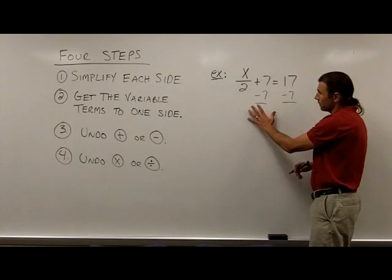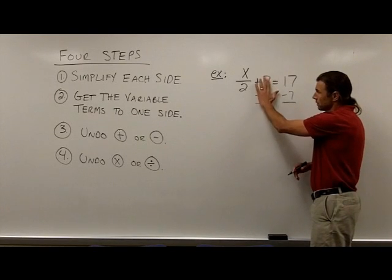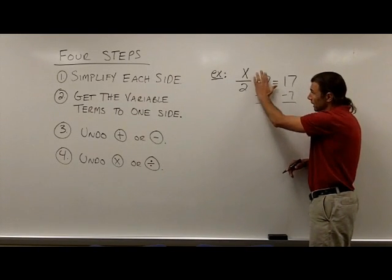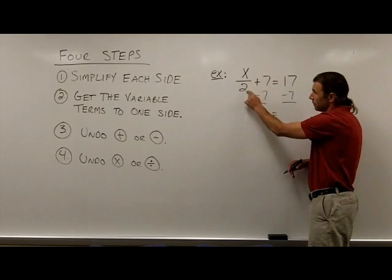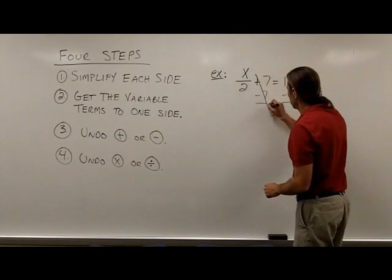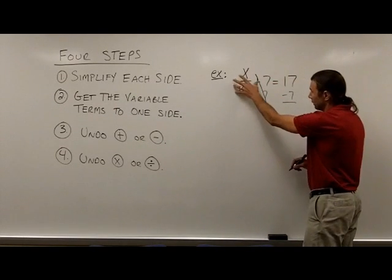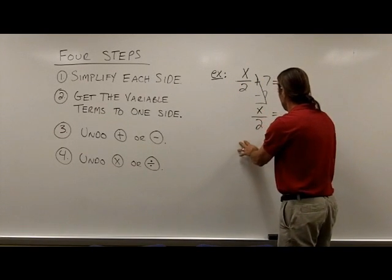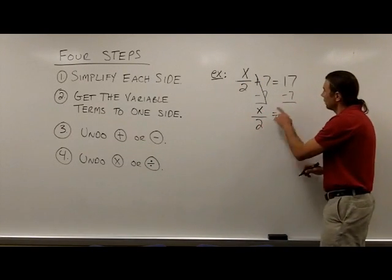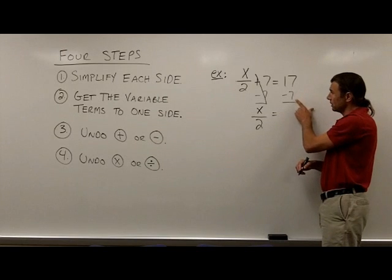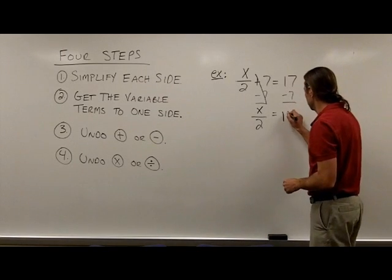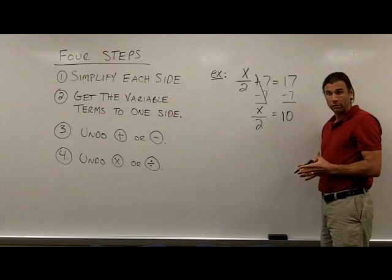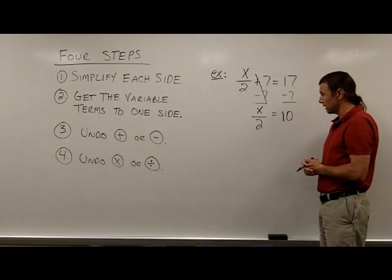After subtracting 7 from the left side, 7 minus 7 gives 0, so those terms drop out, leaving just x divided by 2 on the left side. On the right side, 17 minus 7 gives 10. The equation is now simplified and easier to work with.